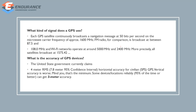What kind of signal does a GPS use? It transmits at 50 bits per second on the microwave band. It has a frequency of approximately 1600 MHz.